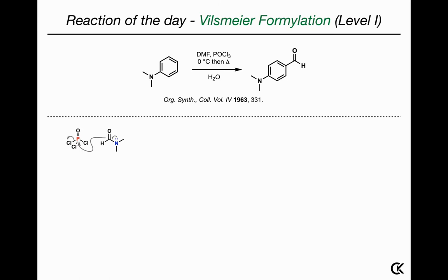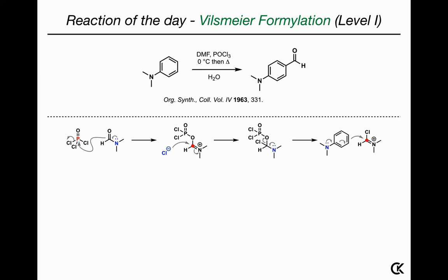The mechanism starts with the attack of the electron-rich oxygen of DMF at the POCl3. Remember, the oxygen of amides is generally more reactive towards electrophiles under neutral conditions, and phosphorus is also very oxophilic. You get this intermediate, and the chloride ion then adds into this iminium electrophile and kicks out the dichlorophosphate ion to form the so-called Vilsmeier reagent.